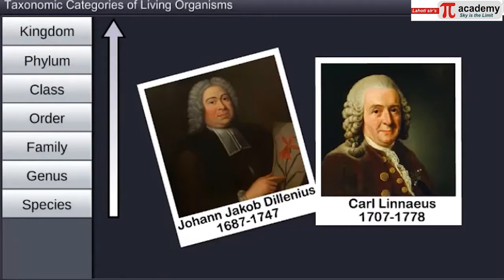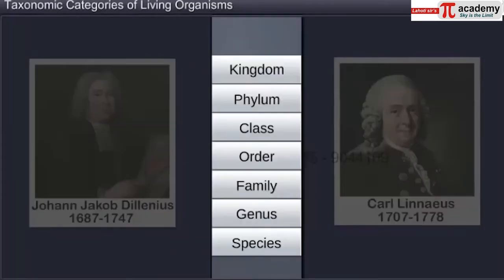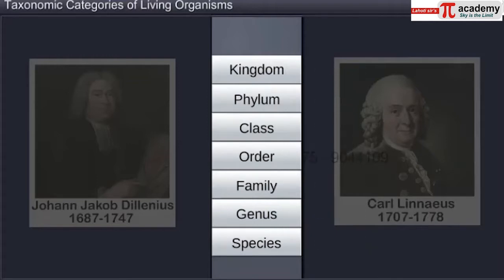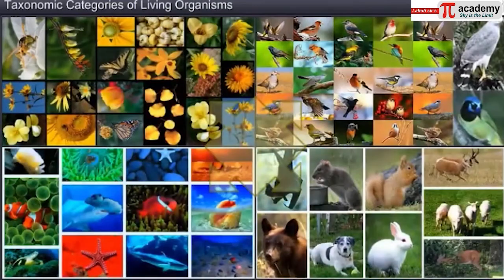This hierarchical structure consists of ranks or categories. Every category is referred to as a unit of classification and is commonly termed as a taxon. Since the category is a part of the taxonomic arrangement, it is known as a taxonomic category, and all categories together constitute the taxonomic hierarchy.